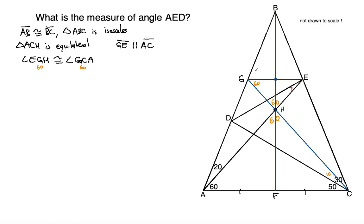Notice that since GE and AC were parallel, angle BGE is congruent to angle BAC — corresponding angles. Since BAC was 80 degrees, the corresponding angle BGE is also 80 degrees. So that means the missing angle to make a straight angle BGD is going to be 180 minus the sum of 60 and 80, which is 180 minus 140, giving us 40 degrees.